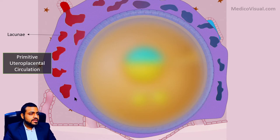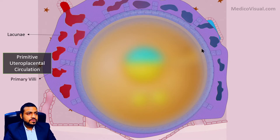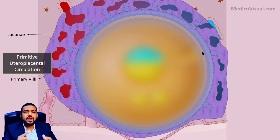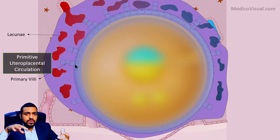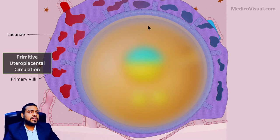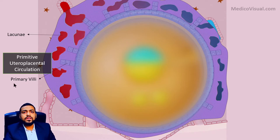During this stage, finger-like projections or processes arise from the cytotrophoblast and go into the syncytiotrophoblast. These finger-like processes are called primary villi. We will discuss their significance in later lectures.